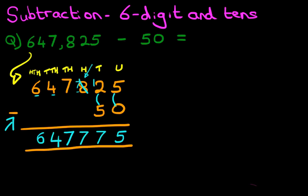And we have our answer. It is 647,775. That is correct. So that is how we do subtraction of a six-digit number and tens using the vertical format.